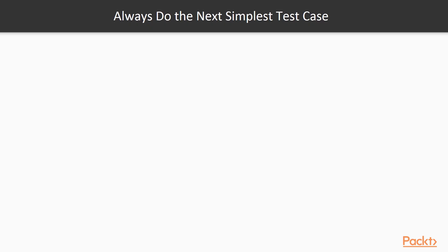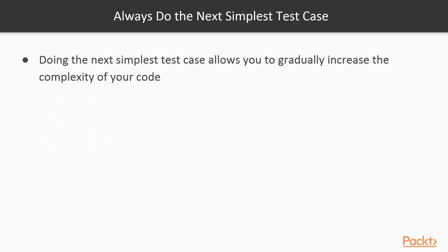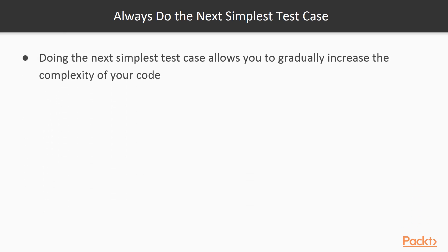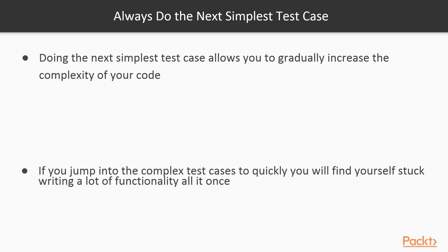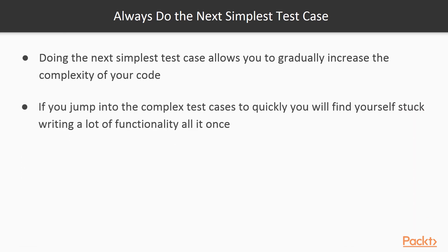First, you should always do the next simplest test case. This allows you to gradually increase the complexity of the code, refactoring as you go. This helps keep your code clean and understandable. If you jump to the complex cases too quickly, you can find yourself stuck writing a lot of code for one test case, which breaks the short feedback cycle we look for with TDD.